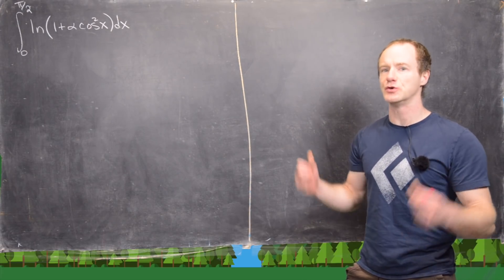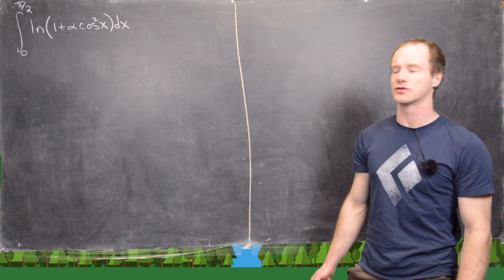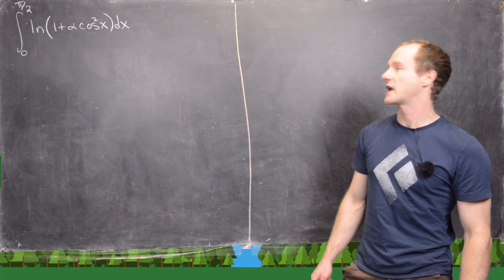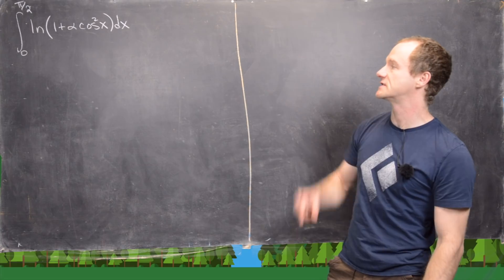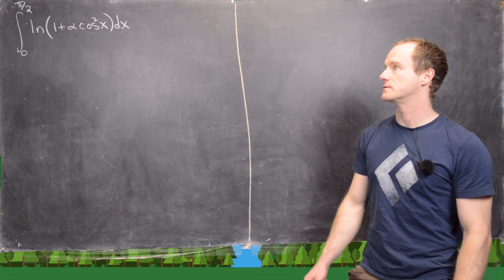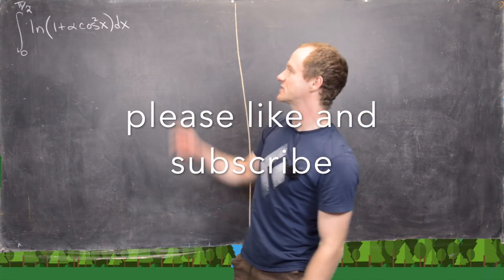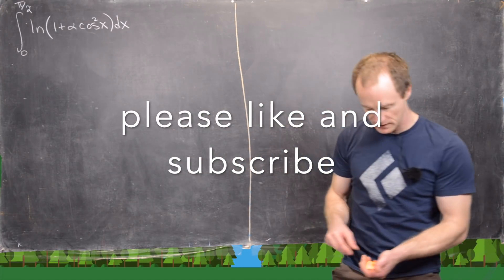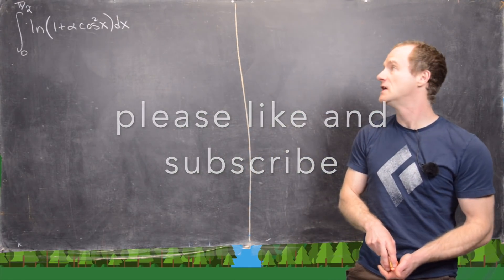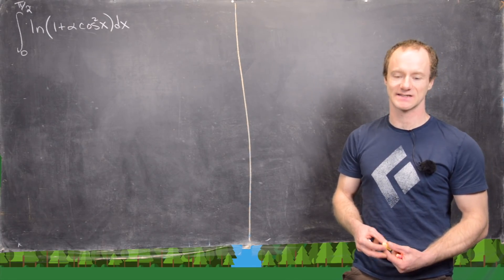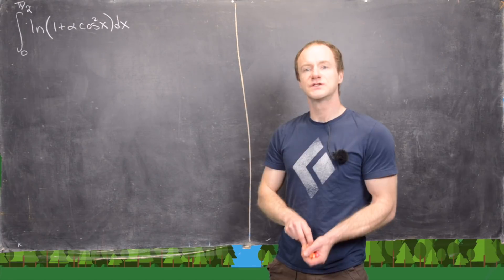This is going to be a classic interesting integral video. The integral I want to look at is the integral from 0 to π/2 of the natural log of 1 plus α times cosine squared of x, dx.